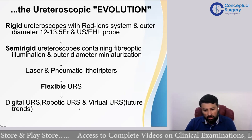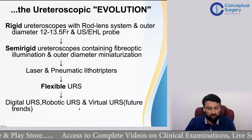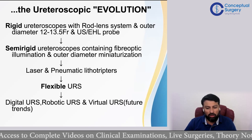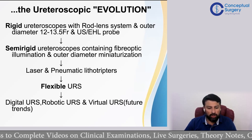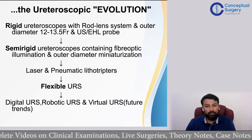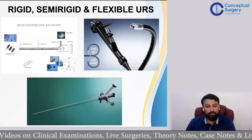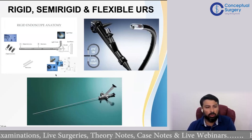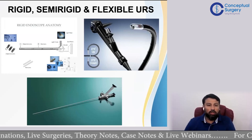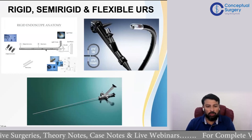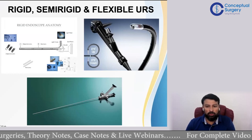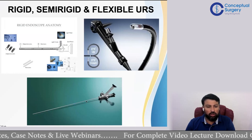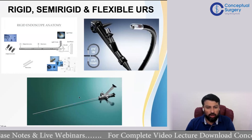The future trend we can look forward to is robotic URS and virtual URS. The rigid, flexible, and semi-rigid scopes we've discussed are the types conventionally used, with flexible scopes being used for RIRS.